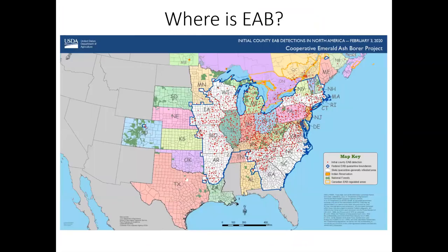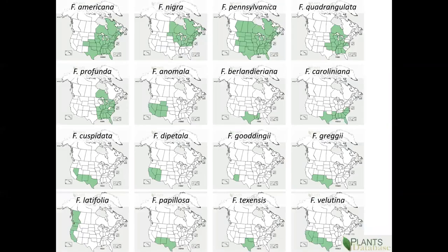Since its introduction in southeast Michigan, probably in the mid-1990s, emerald ash borer has spread throughout the region and into areas of adjacent Canada. There are 16 species of ash in the United States. Five of these live in our region and all of them are susceptible to emerald ash borer.